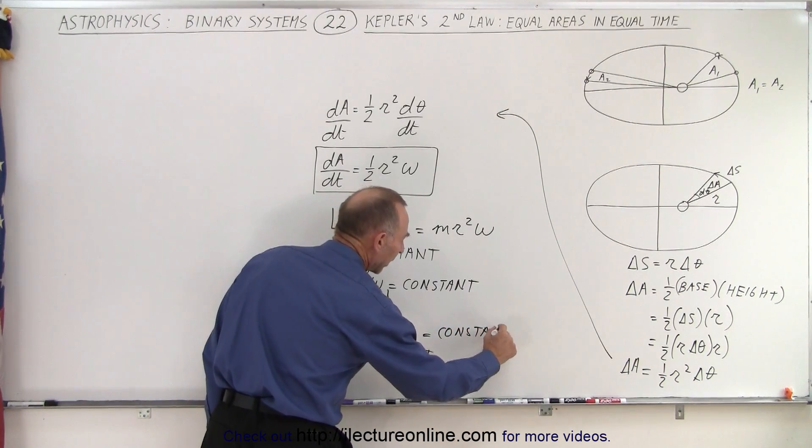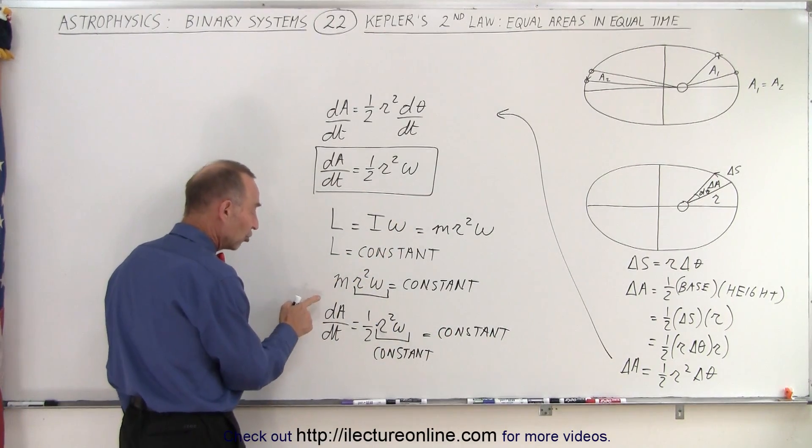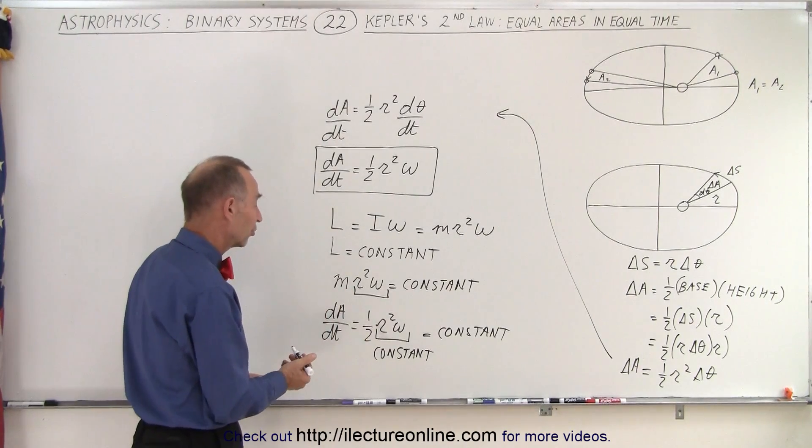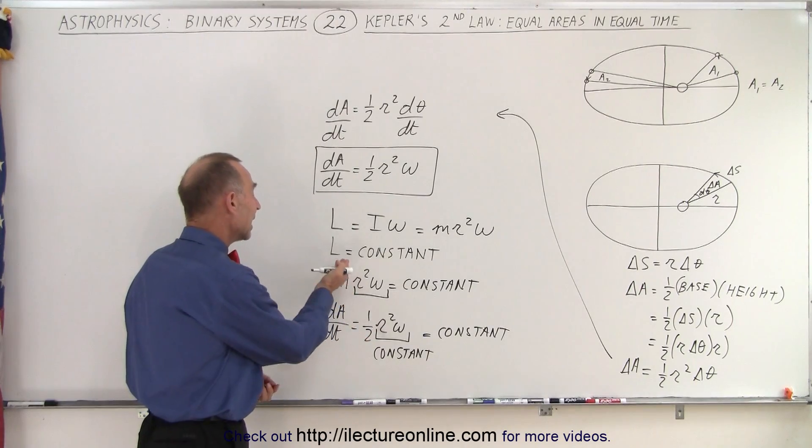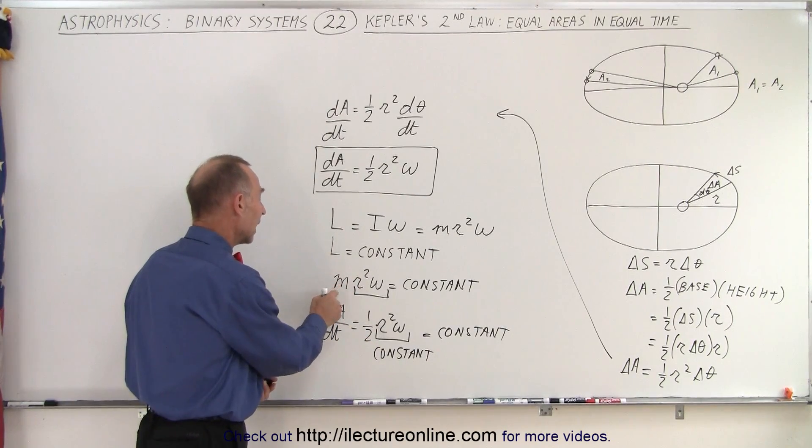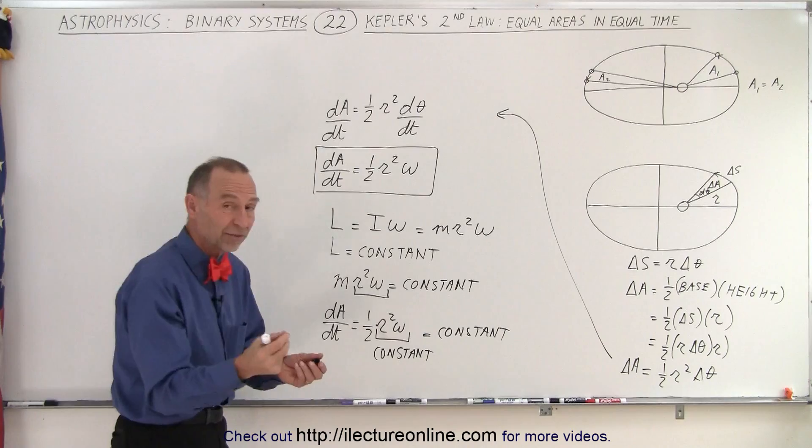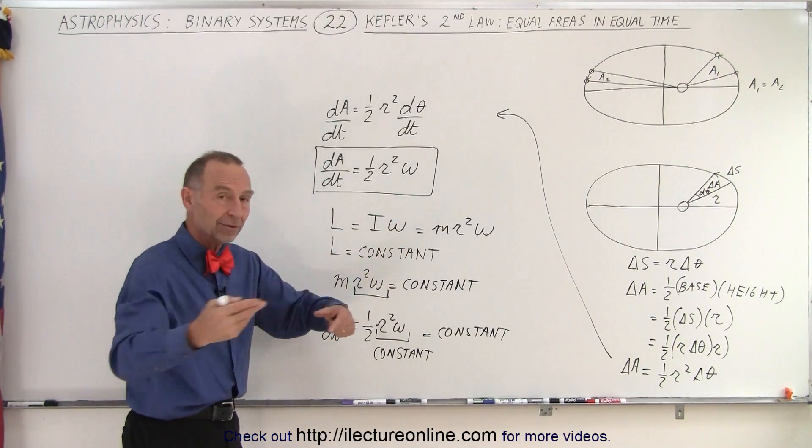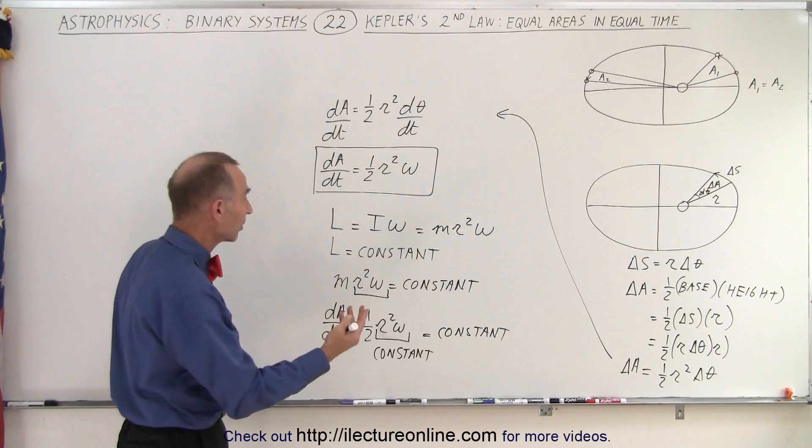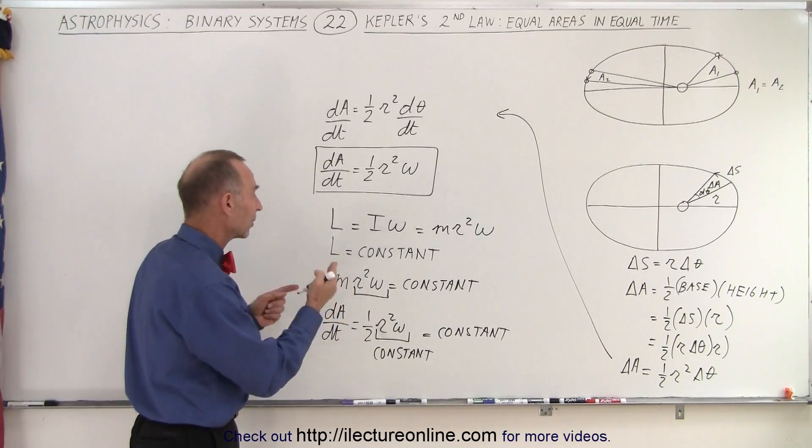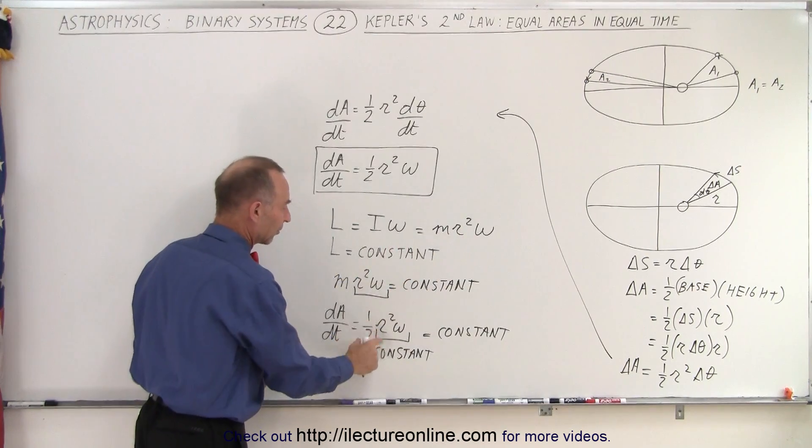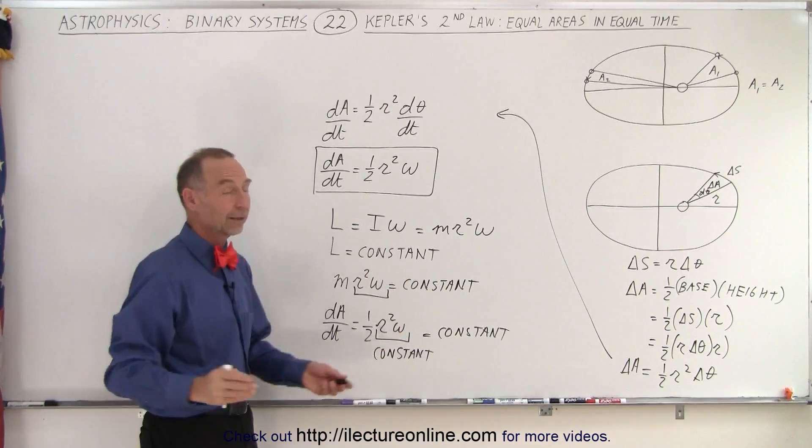So by simply comparing the equation we get for the change in area as a function of time, dA dt, being one half r squared omega, and then taking the angular momentum, and showing that m r squared omega also must be a constant, because an object going around the circle, unless there's something happening to it, you get an impact of a comet or something like that, the object, the angular momentum must be a constant, which means r squared omega must be a constant, and therefore this must be a constant. And so simply by comparing the two, we conclude that yes, Kepler was correct indeed.